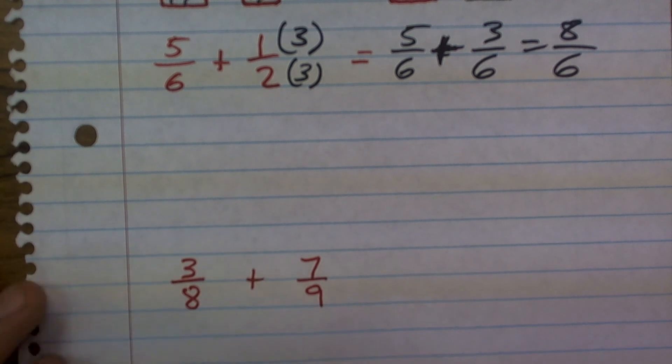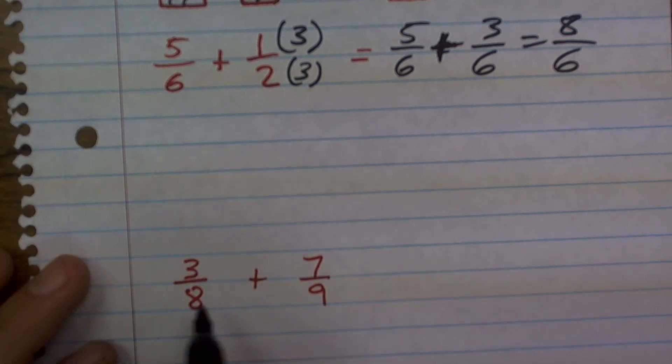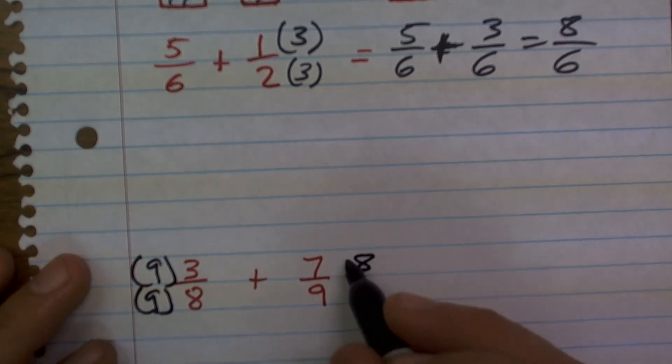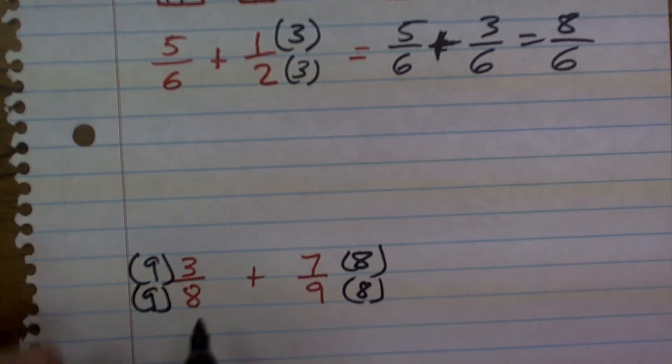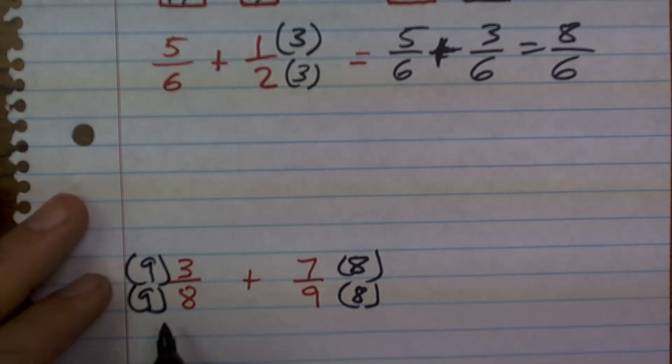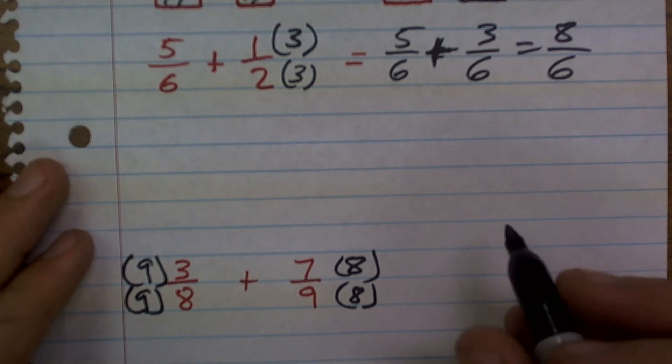To add these, I've got to get them to be the same denominator. So what I'm going to do is multiply by 9/9 and by 8/8. Because what I recognize is the common denominator between nine and eight is 72. And I have to make sure I multiply by the same number to keep equivalent fractions.